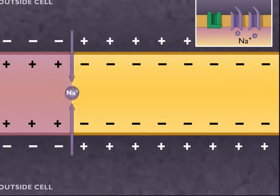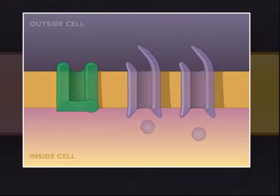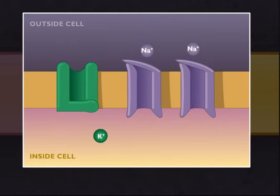Changes occur behind the action potential to restore the resting membrane potential. The voltage-gated sodium channels close and voltage-gated potassium channels open. This allows a rapid flow of potassium ions out of the cell, repolarizing the membrane so that the inside is again negative and the outside positive.